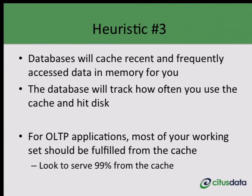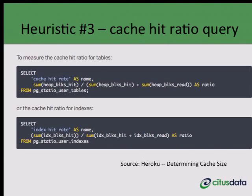A third heuristic relates to how much of your working set your database can serve from memory. For OLTP applications, most of your working set should be served from the cache — ideally 95% to 99% of your lookup queries. In PostgreSQL, a good way to calculate your cache hit ratios is by running specific queries: one measures the cache hit ratio for your tables, and another for indexes. If your cache hit ratio starts dropping below 95–99%, then it may be a good time to start thinking about horizontally scaling.